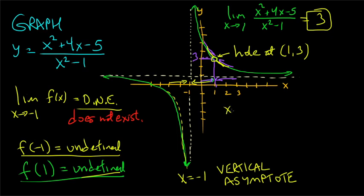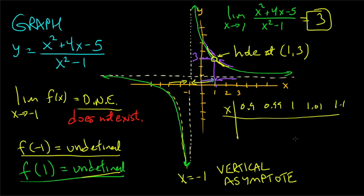The hole at x = 1 means there's no y-coordinate there, but nearby points have y-coordinates close to 3. That limit exists and equals 3. You can confirm this by making a table with x values close to 1 from both sides — you'll get values like 3.01 or 2.99, approaching 3.